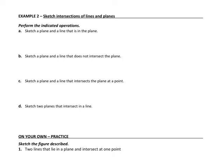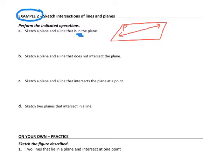On the back of your note sheet, we have example number 2, which is going to ask us to sketch some intersections of lines and planes. The first one says sketch a plane and a line that is in the plane. A plane is just the parallelogram shape we saw on the other side. I'm going to name my plane plane P. Then I draw a line in the plane with arrows on the end and capital letter points — I'm going to place line XY in plane P.